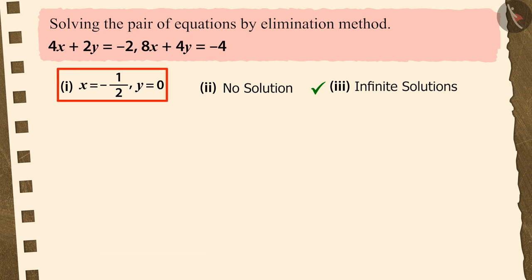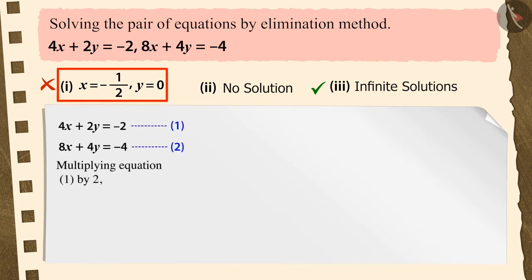If you selected option 1, then it is a good try, but it is the wrong answer. Because to solve the given pair of linear equations, when you multiply equation 1 by 2, you forgot to multiply y by 2 and solve the question further.